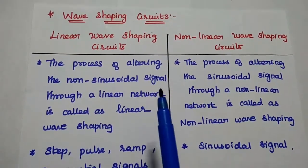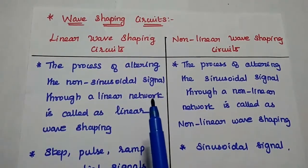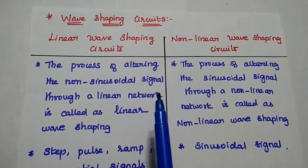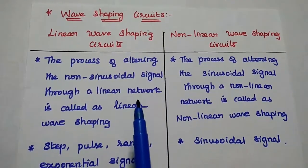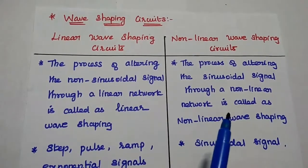Next, wave shaping circuits. These are circuits which are mainly used to alter the shape of the signal. There are two types of wave shaping circuits available: linear wave shaping circuits and non-linear wave shaping circuits.